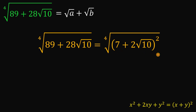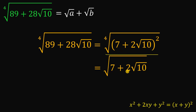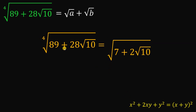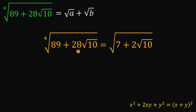We can now simplify the right-hand side. We have the square root of (7 plus 2 times square root of 10) squared, and the exponent 2 cancels with the square root, leaving us with 7 plus 2 times square root of 10. Therefore the fourth root of 89 plus 28 times square root of 10 equals the square root of 7 plus 2 times square root of 10. But the goal is the form square root of a plus square root of b.